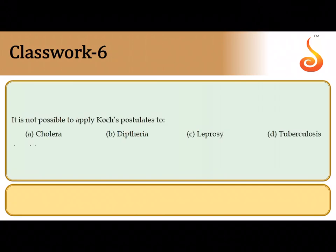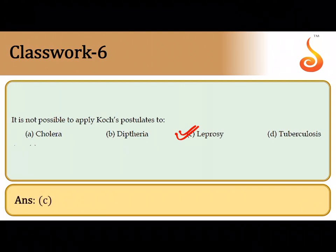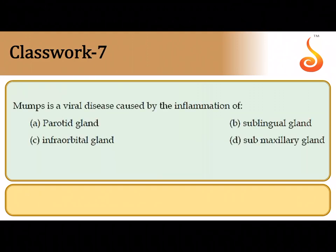The sixth question: it is not possible to apply Koch's postulate to leprosy. This is because you cannot isolate the leprosy-causing bacteria from a patient and grow them in a culture medium. According to Koch's postulate, a pathogen must be culturable under artificial conditions, which is not possible with leprosy. The seventh question: mumps is a viral disease that causes inflammation of the parotid gland, which is the largest salivary gland.